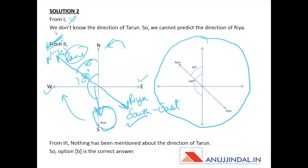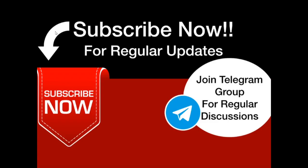For Data 3: it discusses Ria turning relative to Tarun's direction, but Tarun's direction is unknown, so Data 3 is insufficient. Only Data 2 is sufficient — the answer is option B: only the second data is sufficient. If you liked this lecture, please subscribe to my channel and join our Telegram group for regular discussions; links are given in the description.